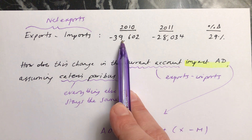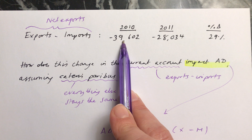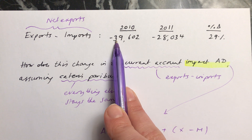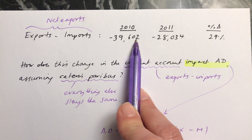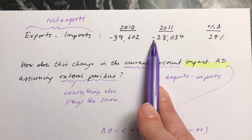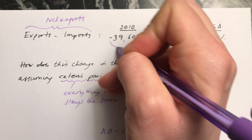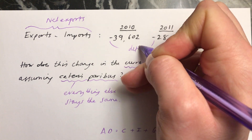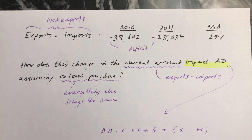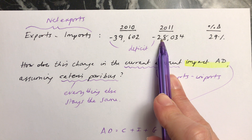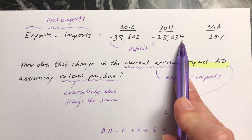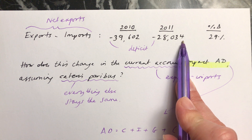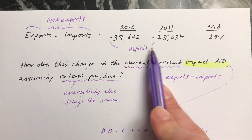In 2010, the figure was negative 39,602. Then one year later, it was still negative — so it was still a deficit. Both of these are a deficit because it's a negative figure. And it was then negative 28,034. So the negative number has actually got smaller, meaning the deficit has decreased.